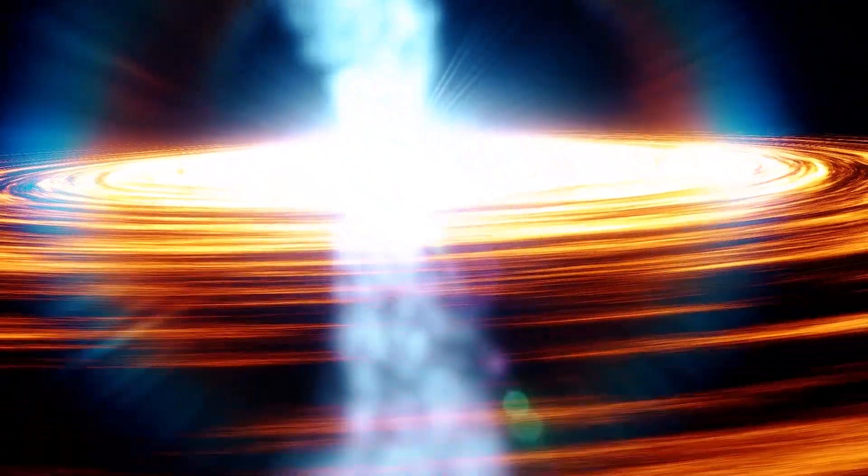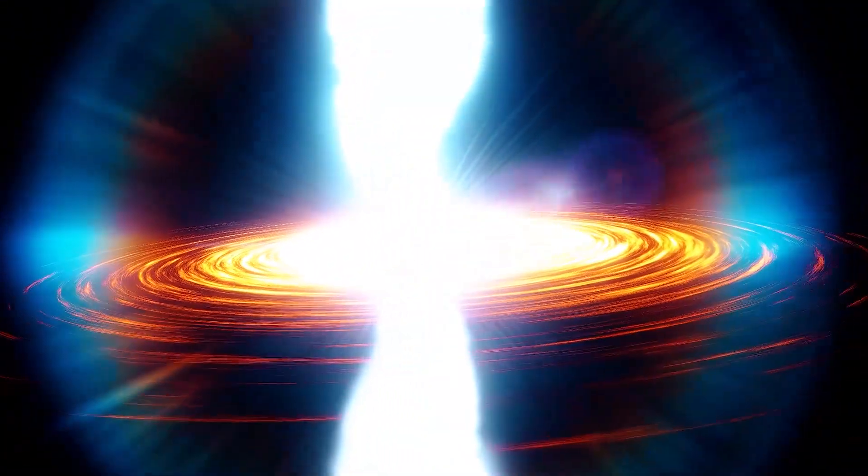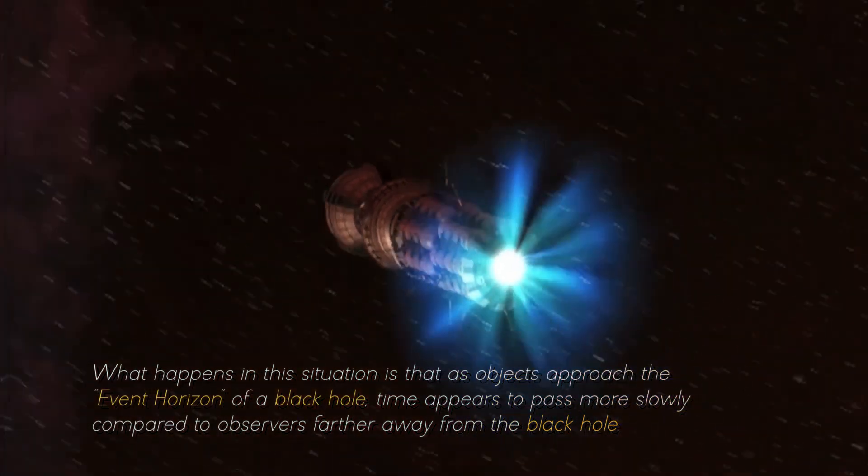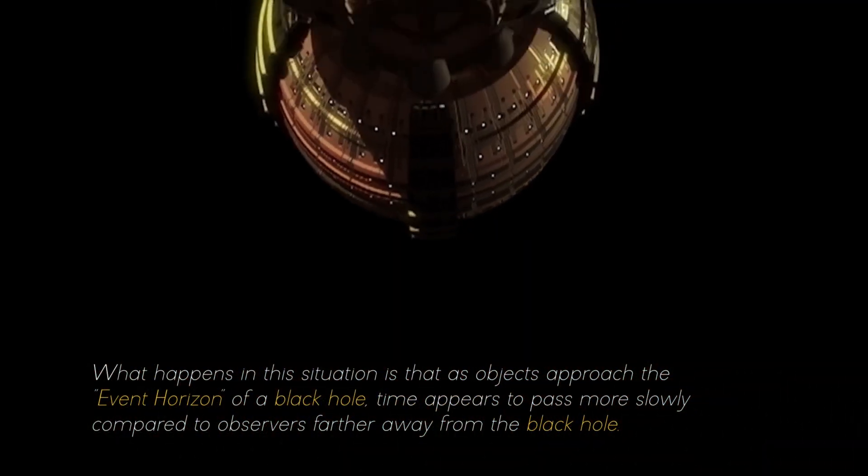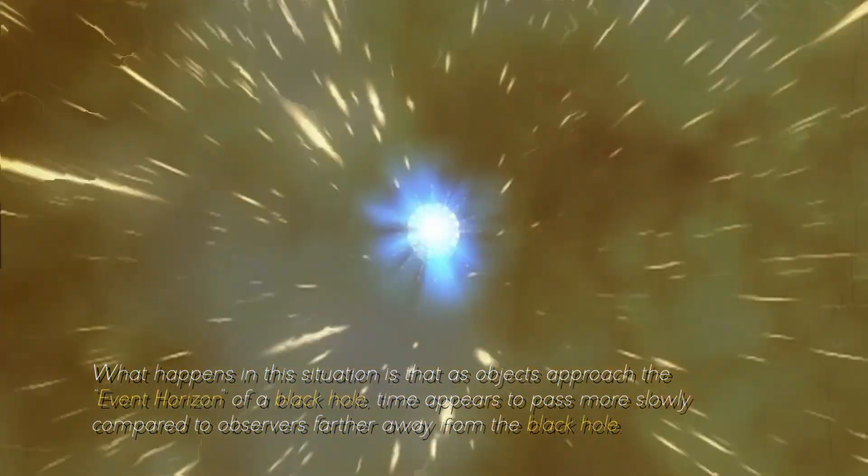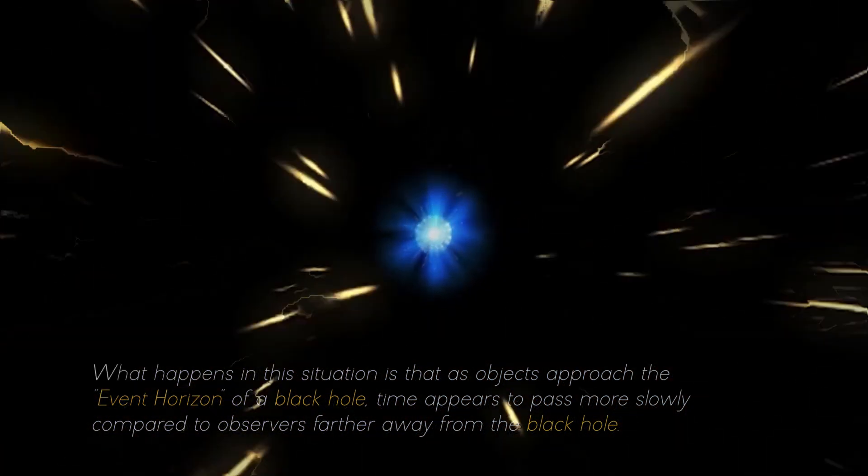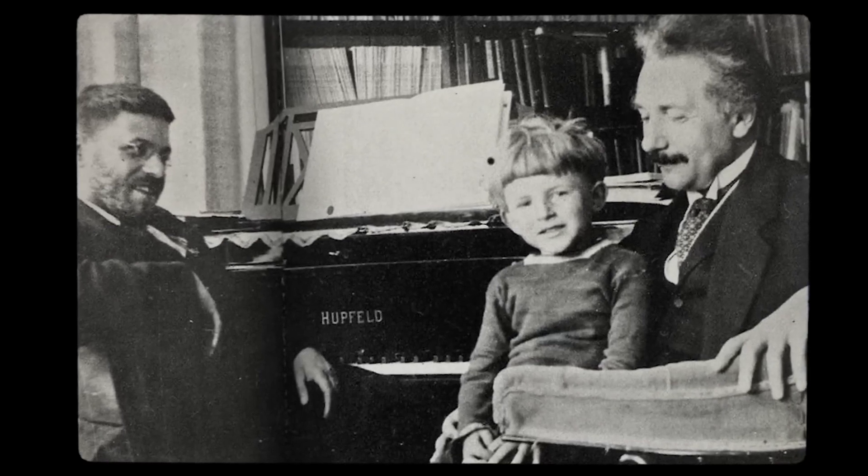But most surprising of all, the extreme gravitational attraction near a black hole gives rise to a phenomenon known as time dilation. What happens in this situation is that, as objects approach the event horizon of a black hole, time appears to pass more slowly compared to observers farther away from the black hole. This phenomenon, predicted by Einstein's theory of relativity, is due to the warping of space-time caused by the intense mass of the black hole.